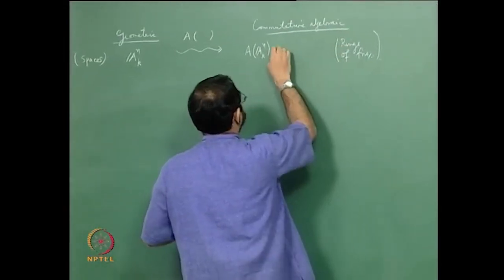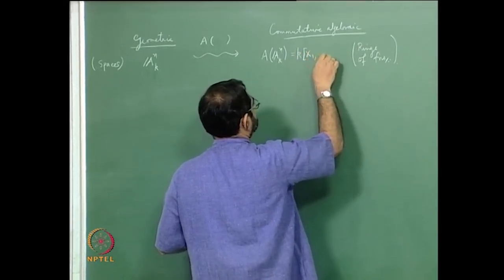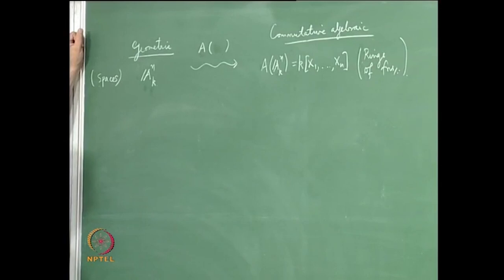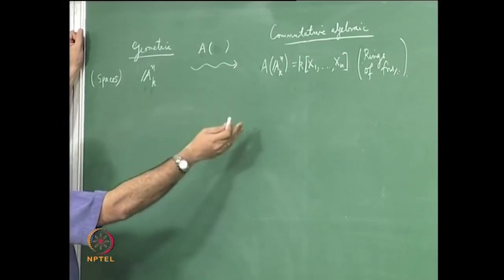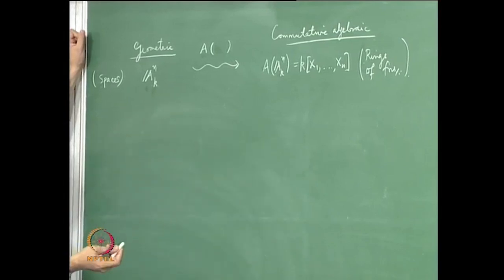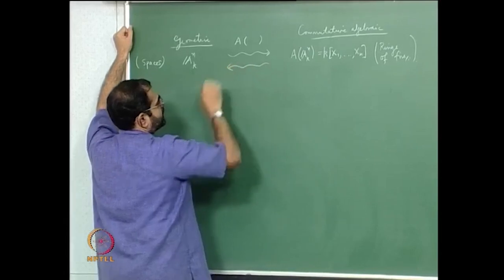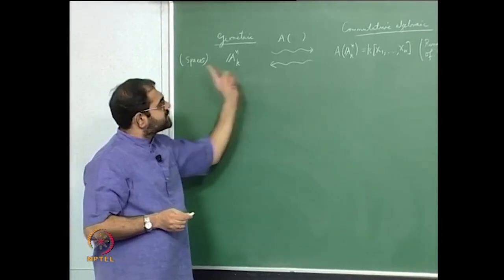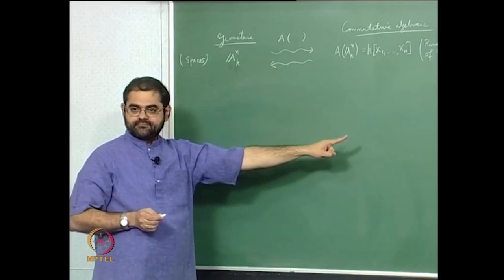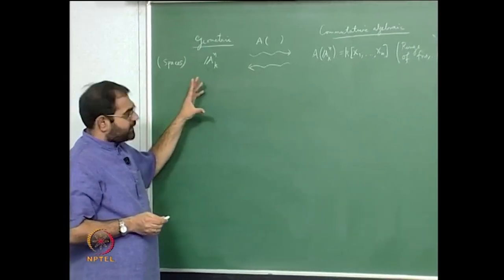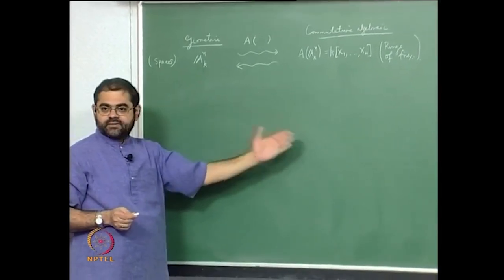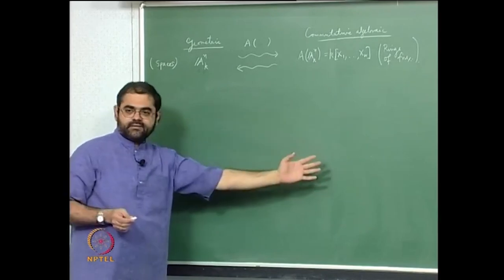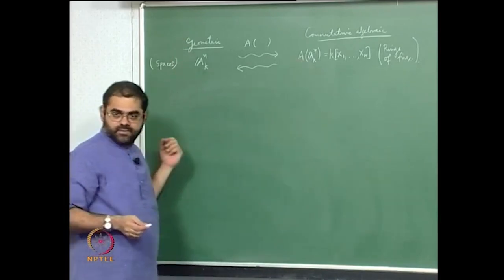If you take affine n-space, this is going to be k[x1, ..., xn]. There is also an association that goes from the algebraic side back to the geometric side, which makes this a bijective correspondence. This is another instance of the interaction between algebraic geometry and commutative algebra — there is always a dictionary going from the geometric side to the commutative algebraic side and back and forth.